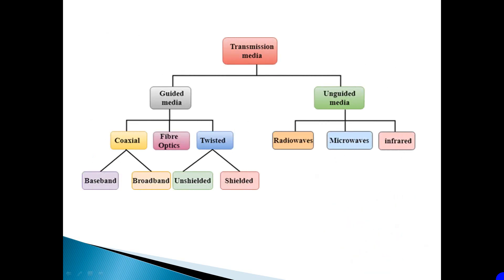There are two types of transmission media: guided and unguided. Guided is divided into three types: coaxial, fiber optic, and twisted. Unguided is divided into radio wave, microwave, and infrared.